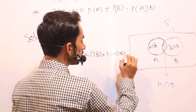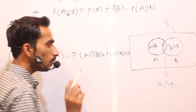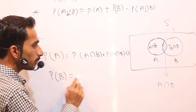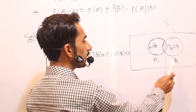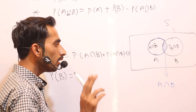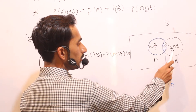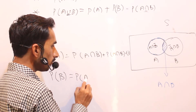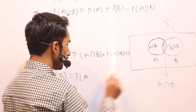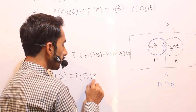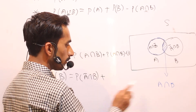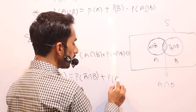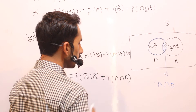If we talk about event B, it is also composed of two portions. It can be written as probability of A-bar intersection B plus probability of A intersection B. This is equation number two.